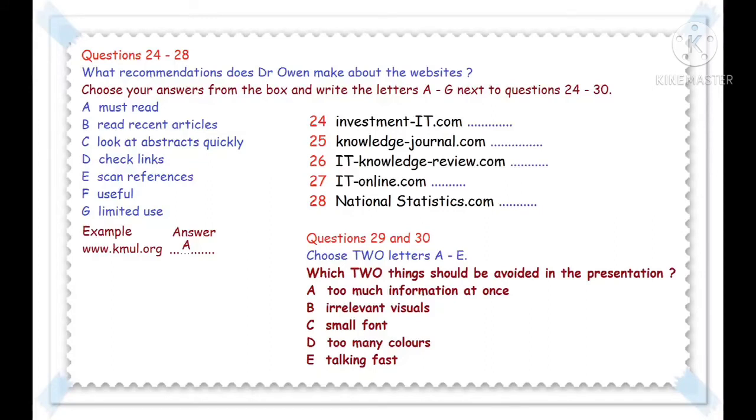Then there's itknowledgereview.com. It's got loads of articles, but it's probably best just to read those that have come out in the last term or so. Do you have to subscribe? No, it's free from the university library. And another free journal online is itonline.com. I wouldn't say it's essential to read it, but it is beneficial. And so I think it is worth a look. If you think it's useful, there is no harm in looking at it.